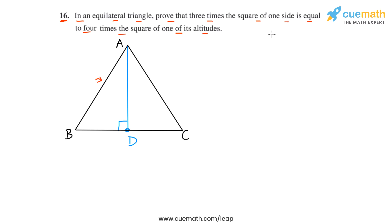We have to show that 3 times AB square is equal to 4 times the square of one of its altitudes. So let's take the altitude to be AD. So 4 times the square of altitude would be 4 AD square. So what we really have to show or to prove is that 3 times AB square is equal to 4 times AD square.